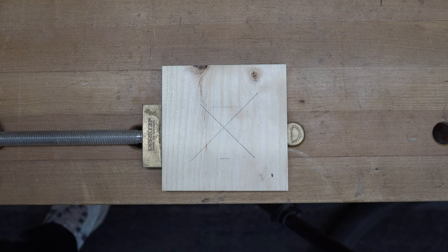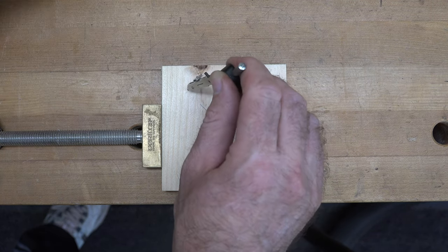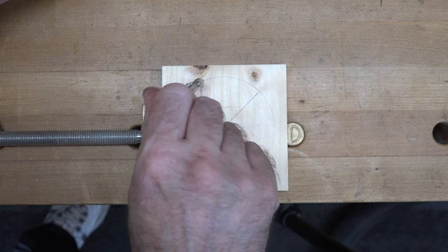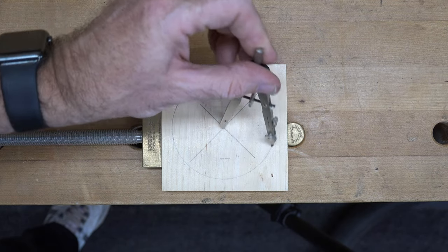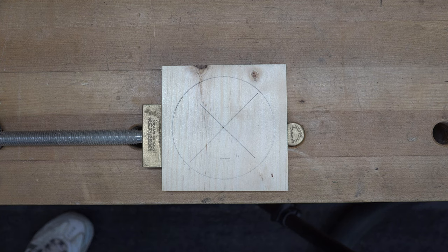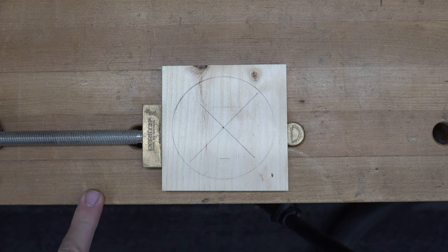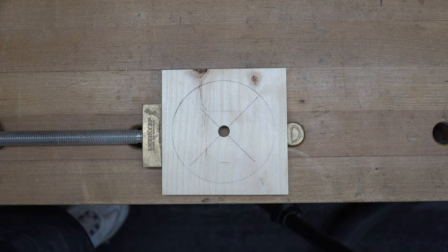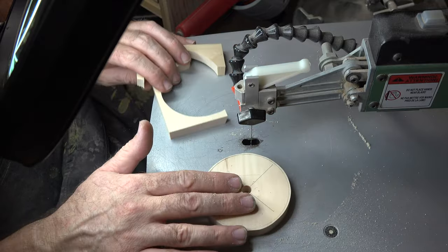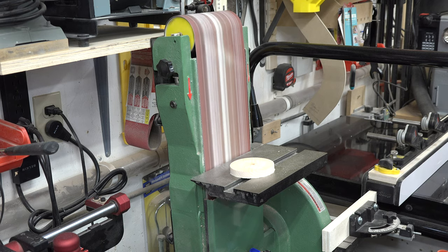We now need to draw a three and five-sixteenths diameter circle, so we will set our compass at a one and twenty-one thirty-second inch radius and we will draw that circle on here. Now like I said, these measurements may seem a little persnickety, but it's the best way to get our proportions right. Now that we have that circle drawn, I want to take it over to the drill press and we will drill a through hole three-eighths of an inch in diameter right in the middle. And we can now take it over to the scroll saw.